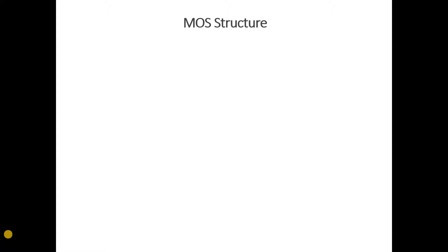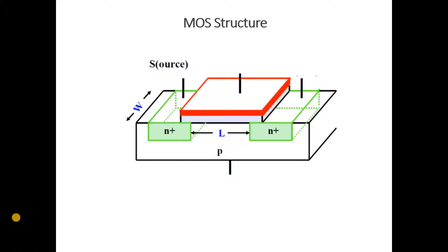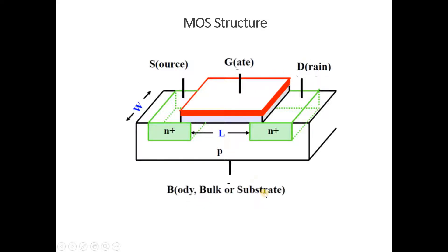Your MOSFET is basically a four-terminal device. We have source, gate, drain, and also bulk or body. This is basically an N-channel MOSFET in which L is the length of the channel and W is the width of the channel. These two parameters are very important for device working and optimization.